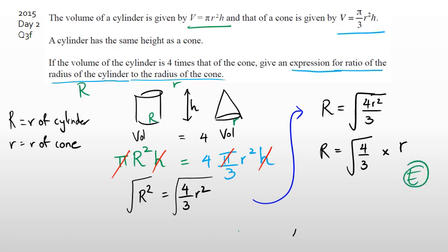Grades-wise, that's your excellence. If you make a small mistake going from R squared equals 4/3 r squared to the final expression, that's a merit. Just putting the two volumes equal to each other gets you achieved. Any questions? Alright guys, that's it for today — thank you for coming and watching.